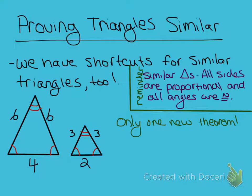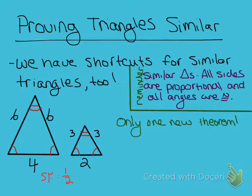Looking at the example on the screen, I've given you an isosceles triangle that has been dilated by a scale factor of one half — so that's going from big to small. If you're doing a reduction, or what we call a shrink, the scale factor is between 0 and 1. These are in fact two similar figures because all sides are proportional and all angles are congruent.